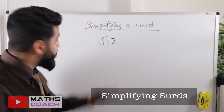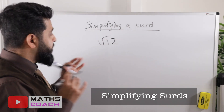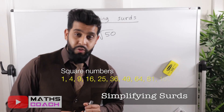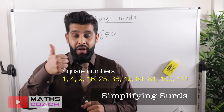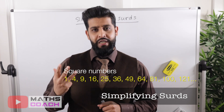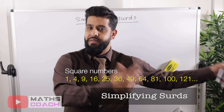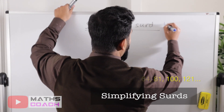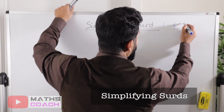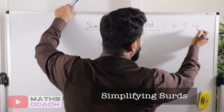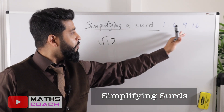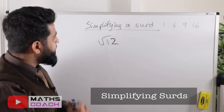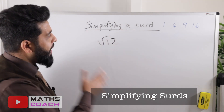Let's start with our first question: we want to simplify √12. Before you do this, you need to know your square numbers. The square numbers are: 1×1, 2×2, 3×3, 4×4, 5×5, 6×6, and so on. So we have 1, 4, 9, 16 — that will suffice for now.